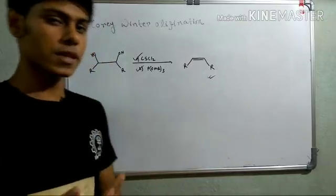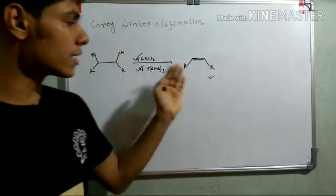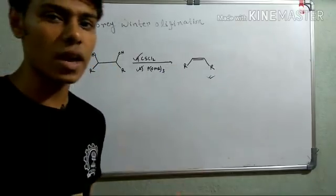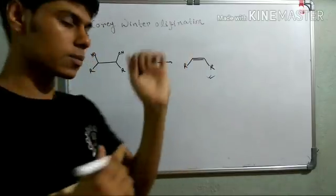Now, the reaction is stereospecific. So, if you use cis-diol, you will get cis-alkene, and if you use trans-diol, you will get trans-alkene. So, now we will discuss what is the mechanism of the reaction.